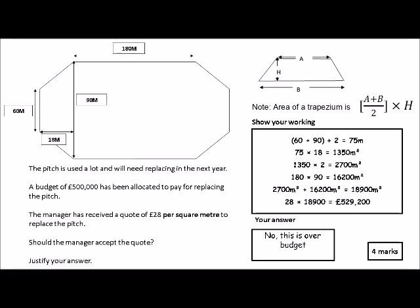And then we work out the cost by times-ing the total area of the pitch by 28, and then we get the cost in pounds, which is £529,200. And then our answer would be no, this is over budget—you're going to get another point for that.